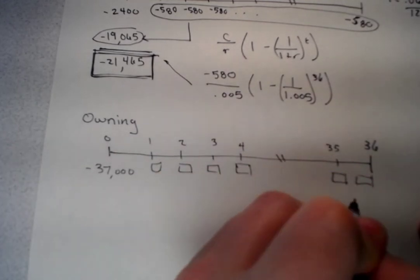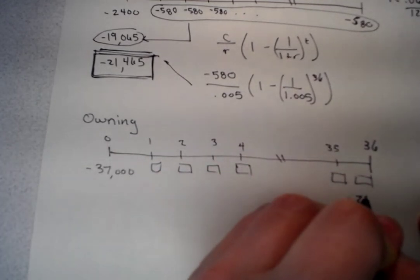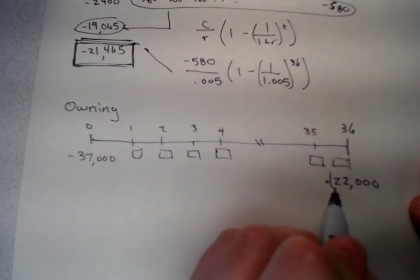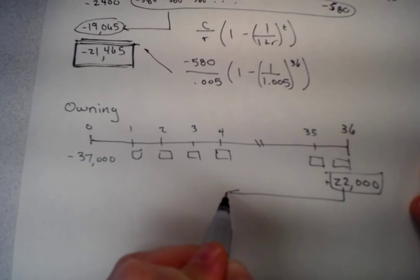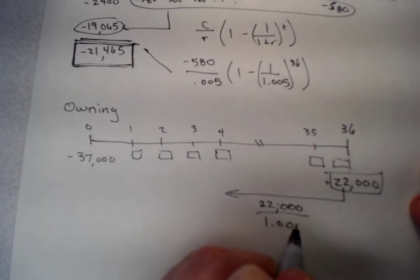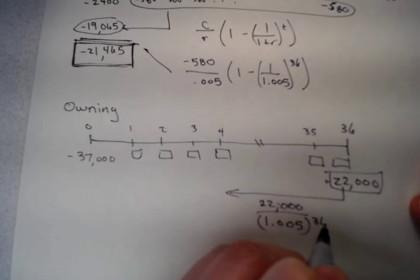The only thing that we have to account for in addition is that we're going to get $22,000 in month 36. We have to discount this back to present day. So that'll be $22,000 divided by 1.005 to the power of 36.